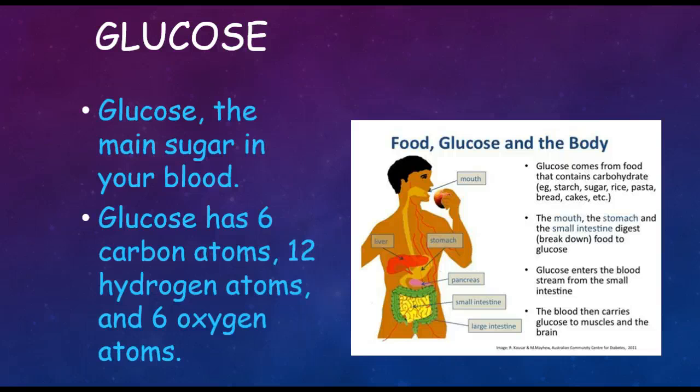A little bit more about glucose. As I mentioned, glucose is the main sugar in your blood. Glucose has six carbon atoms, twelve hydrogen atoms, and six oxygen atoms. Therefore, it follows the 1 to 2 to 1 ratio that we previously discussed.